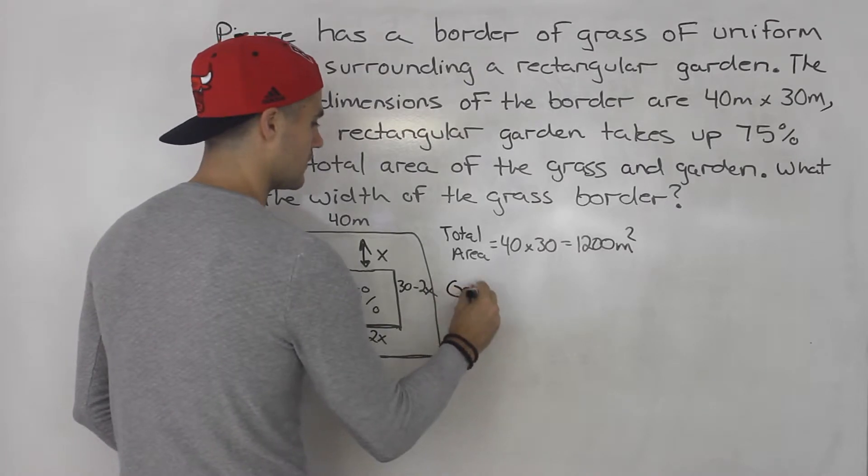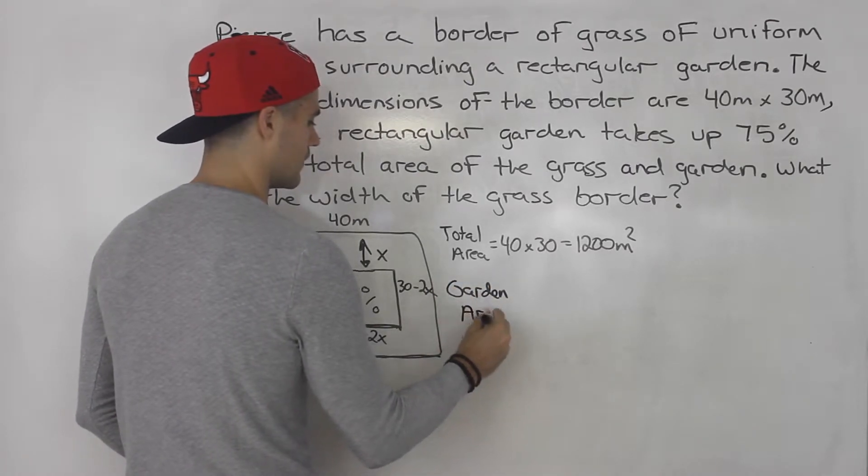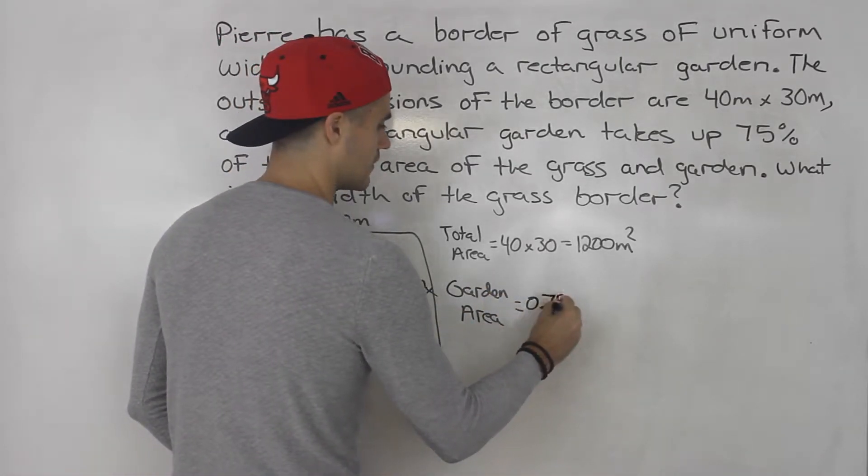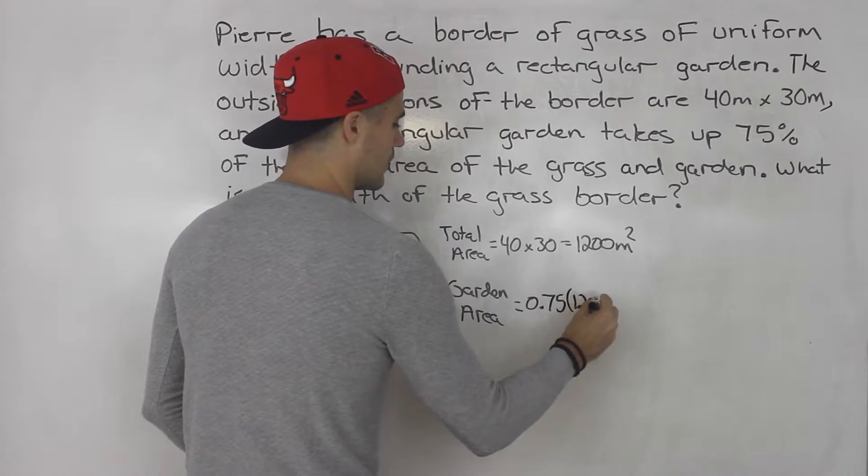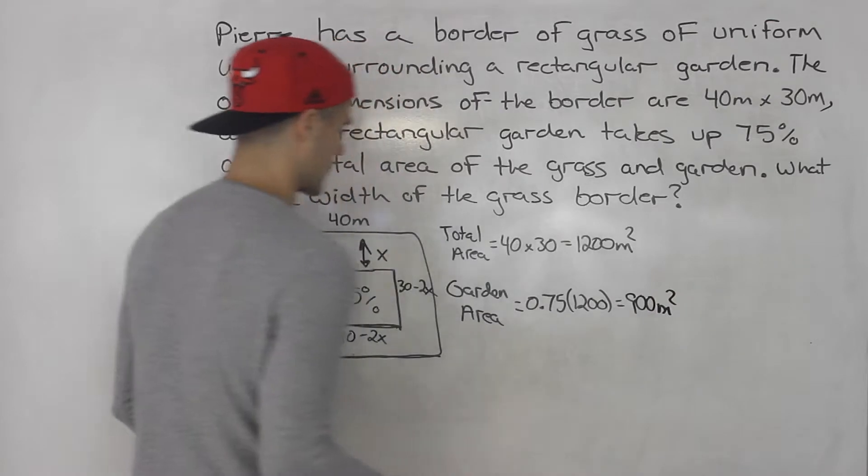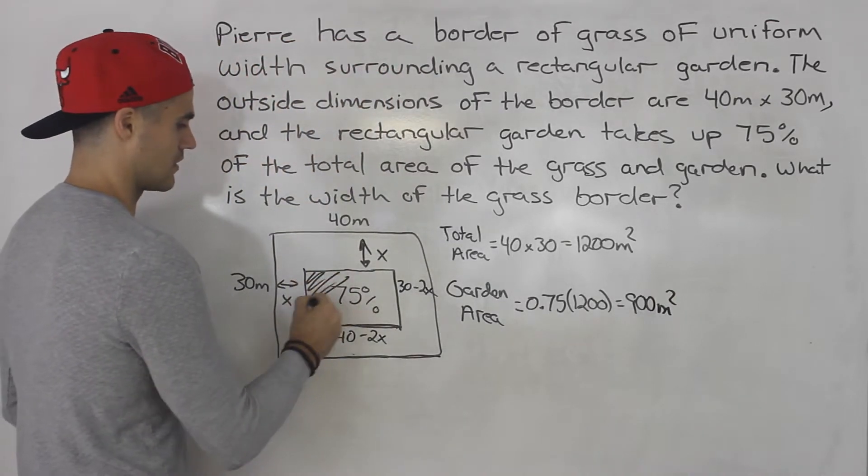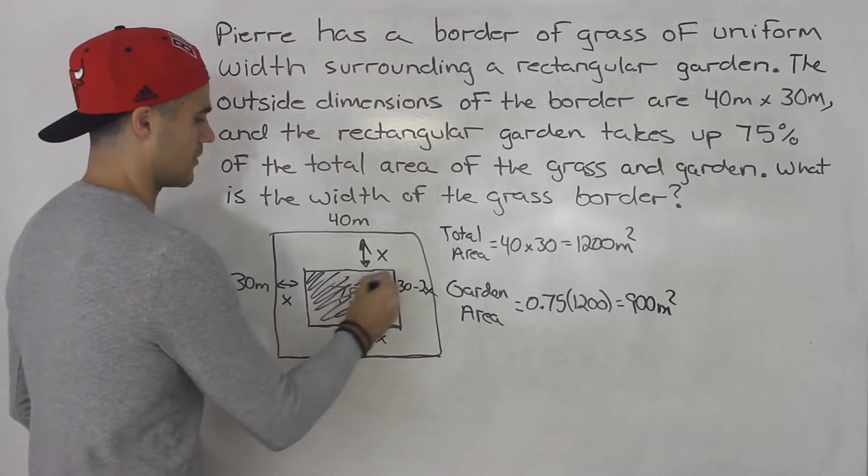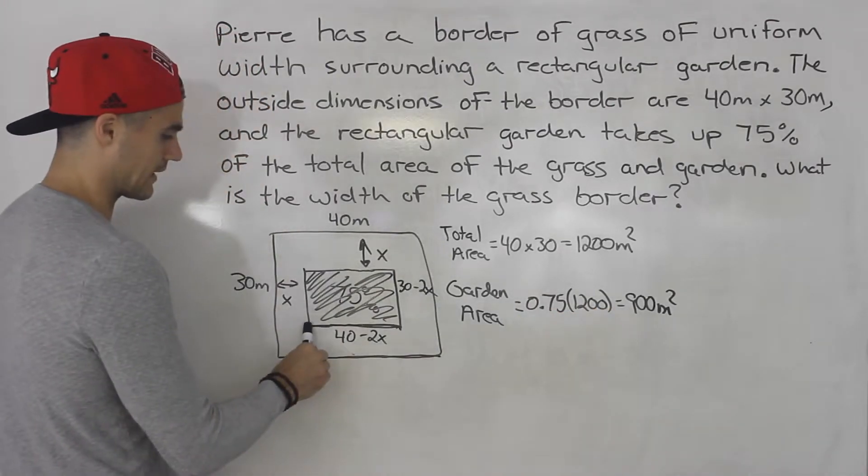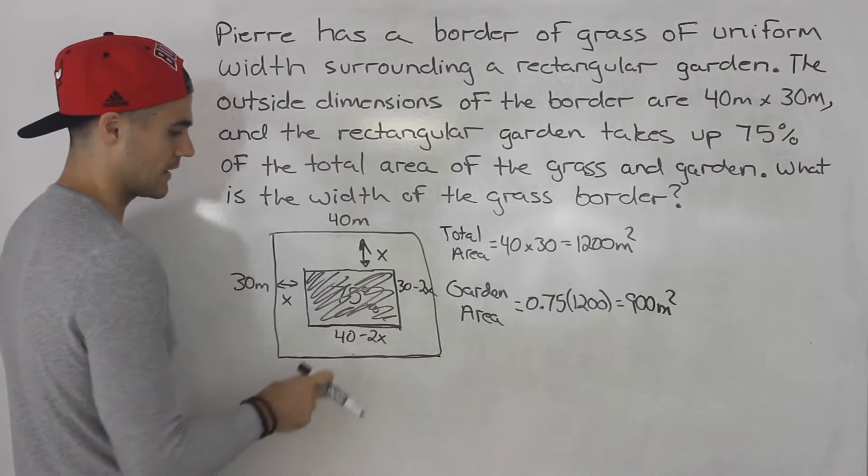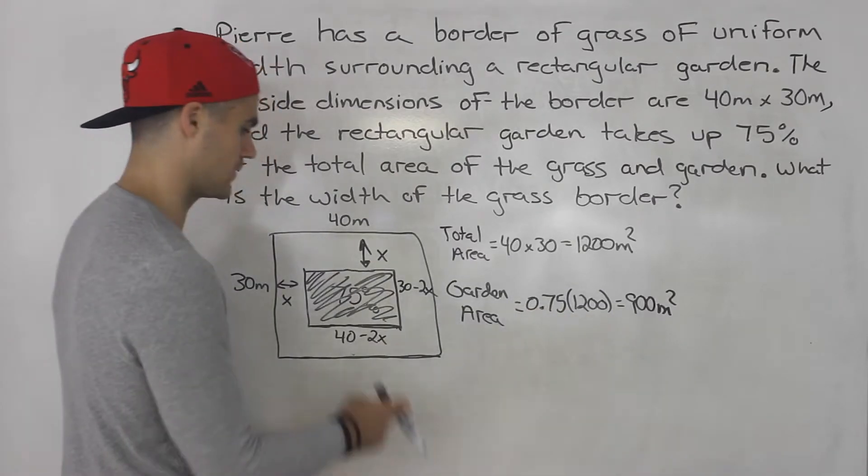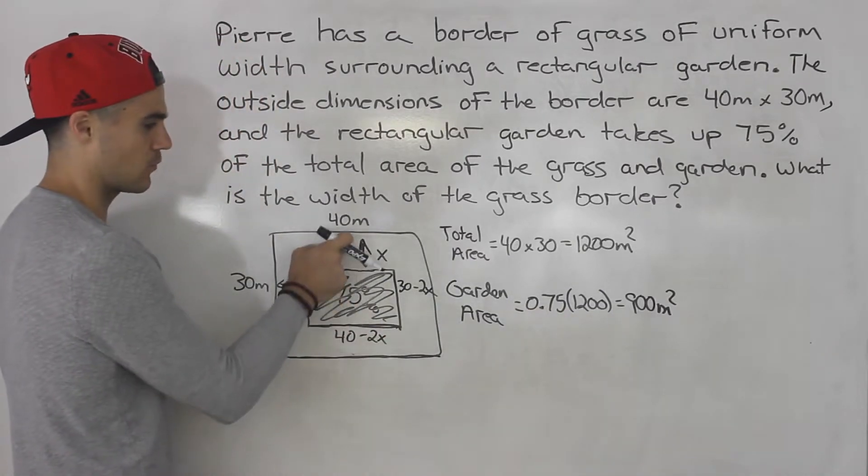So the garden area is going to be 75% of 1200 which is 900 meters squared. So this here all has an area of 900 meters squared. And we know that the length is 40 minus 2x, the width is 30 minus 2x. So basically length times width has to equal 900. And then we can solve for that x value that width right there.